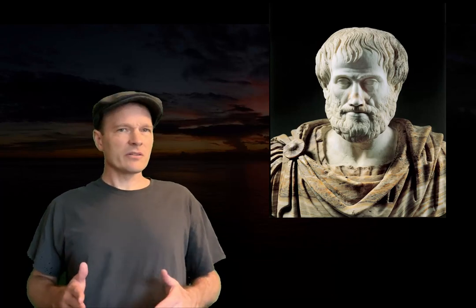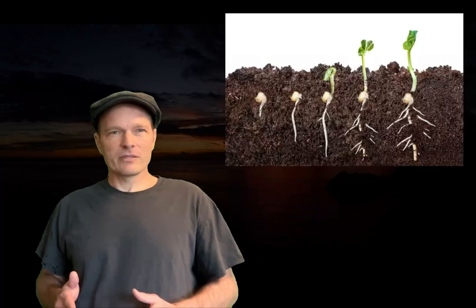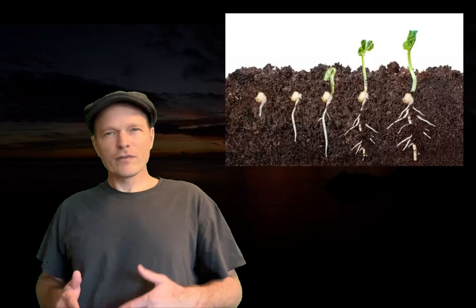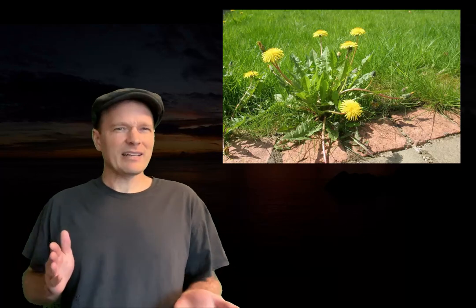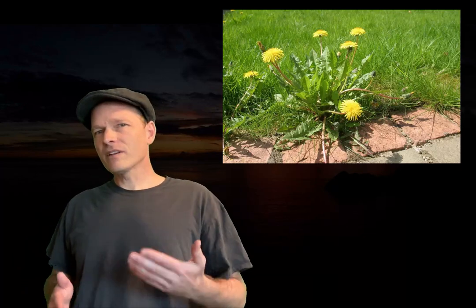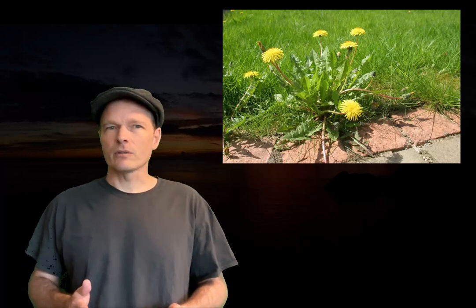Aristotle, who lived from 384 to 322 BCE, had a tremendous impact on modern scientific thinking. At the time, it was already understood that plants grew from seeds. However, if you've ever maintained a garden, you know that weeds seem to spring up spontaneously where you haven't actually planted anything, so it was believed that some plants were self-generated from the nutrients in the ground. Aristotle wrote a series of books called History of Animals. In book number five, he suggested that animals formed spontaneously, just like plants seem to do.